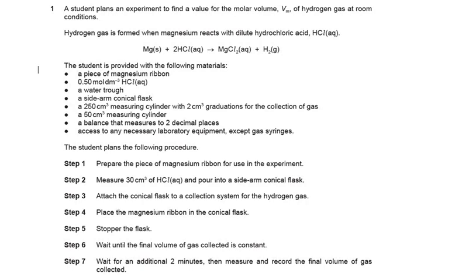Here is Question 1 of Question Paper 5 Variant 2 of Summer 22. In short, we need to find the value of molar volume Vm of hydrogen gas at room conditions. The reaction happening is: magnesium ribbon reacts with hydrochloric acid to produce hydrogen gas, and then we'll be calculating the molar volume.